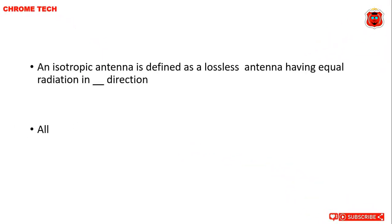An isotropic antenna is defined as the lossless antenna having equal radiation in all directions. All directions is the correct answer.